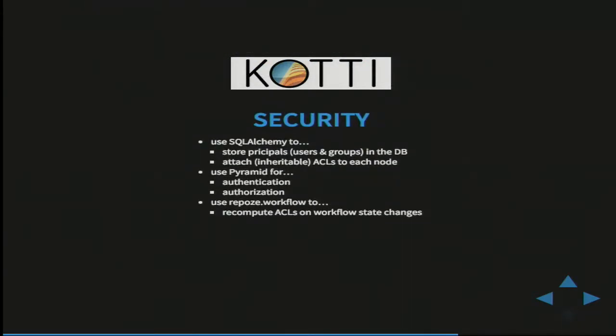Let me give you one example of how we combine multiple best-of-breed components into a fully functional system. With regard to security, we use SQLAlchemy to store principals — that is, users and groups — in the database and attach inheritable ACLs to each node. We use Pyramid for the process of authentication and authorization, and we use repose.workflow to recompute these ACLs on every workflow state change.